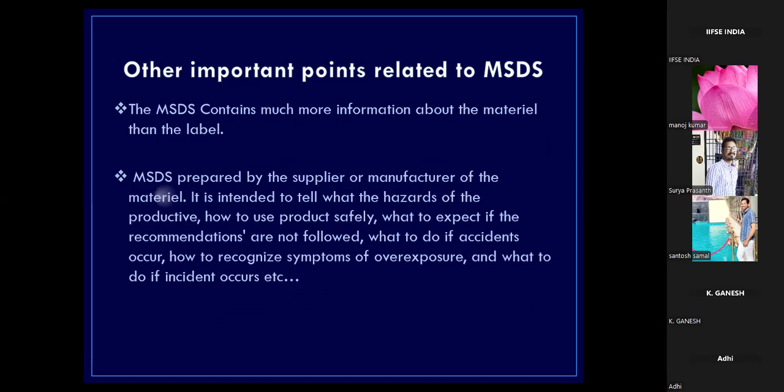MSDS contains much more information about the material than the label alone. The label doesn't provide full details; you can get detailed information only by going through the MSDS of that particular chemical. MSDS is prepared mainly by the supplier or the manufacturer. If you receive a new chemical, you can ask the supplier to provide the MSDS — it is their duty to provide it to the safety person. You can also download it from the internet. It tells you the hazards of the product and how to use it safely.